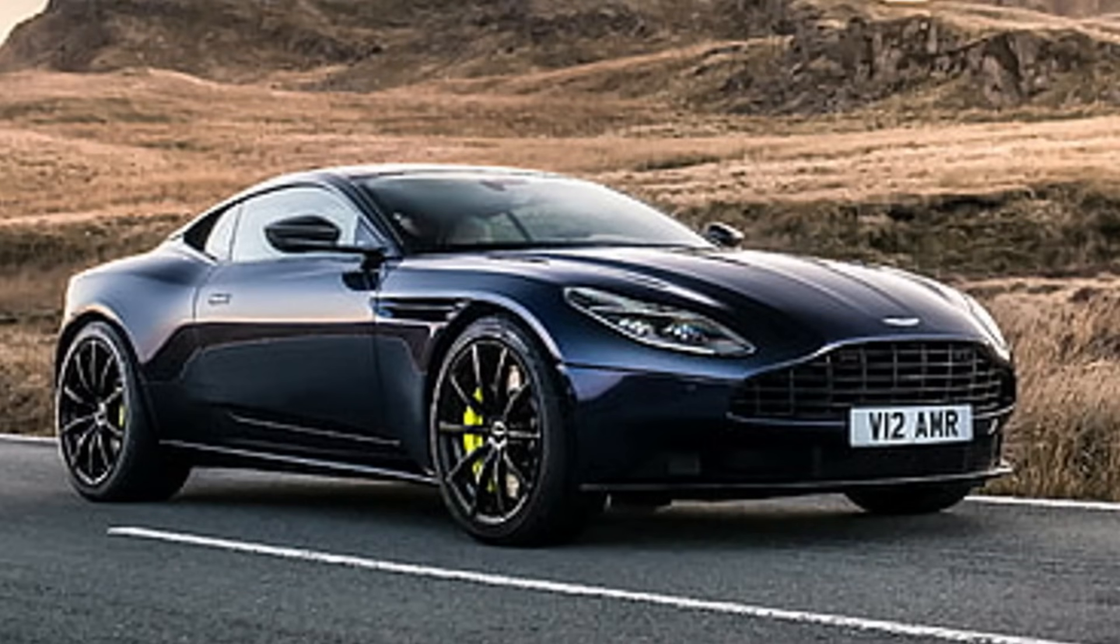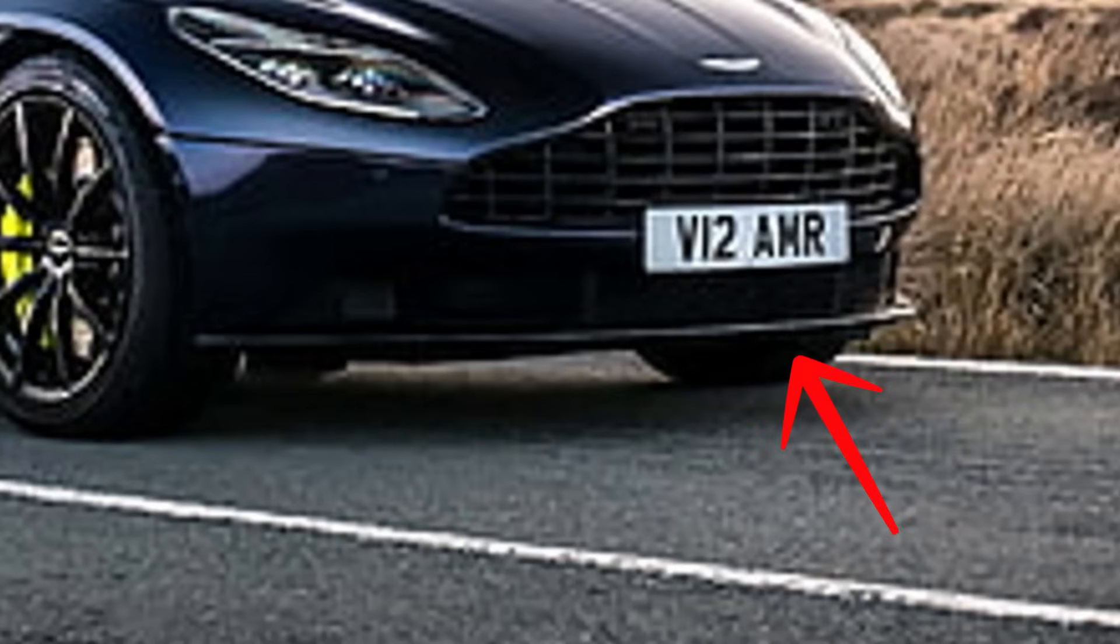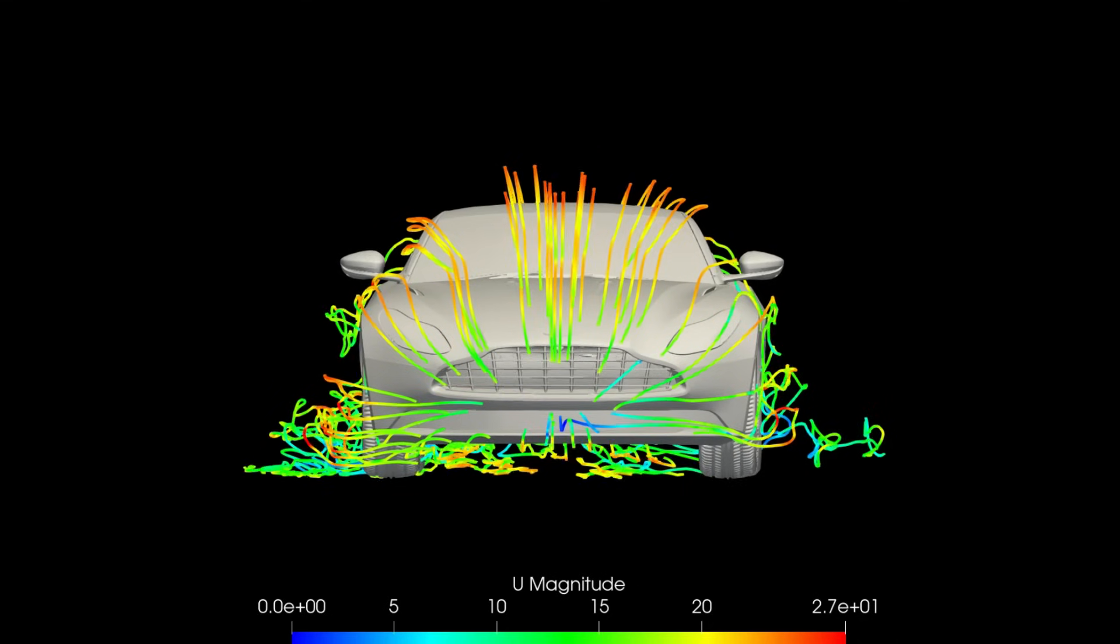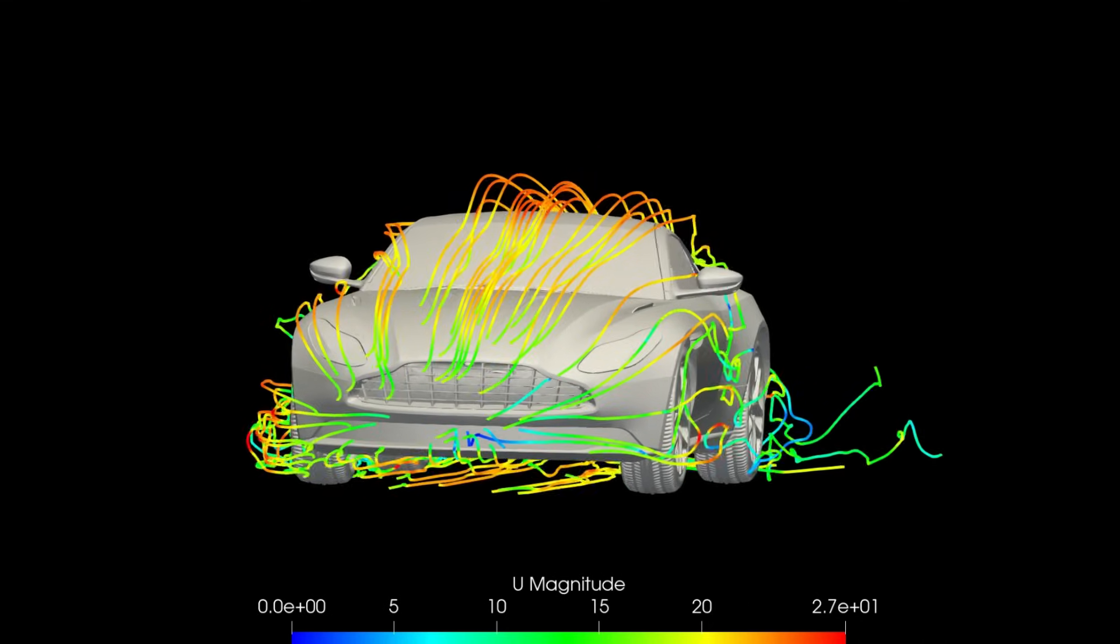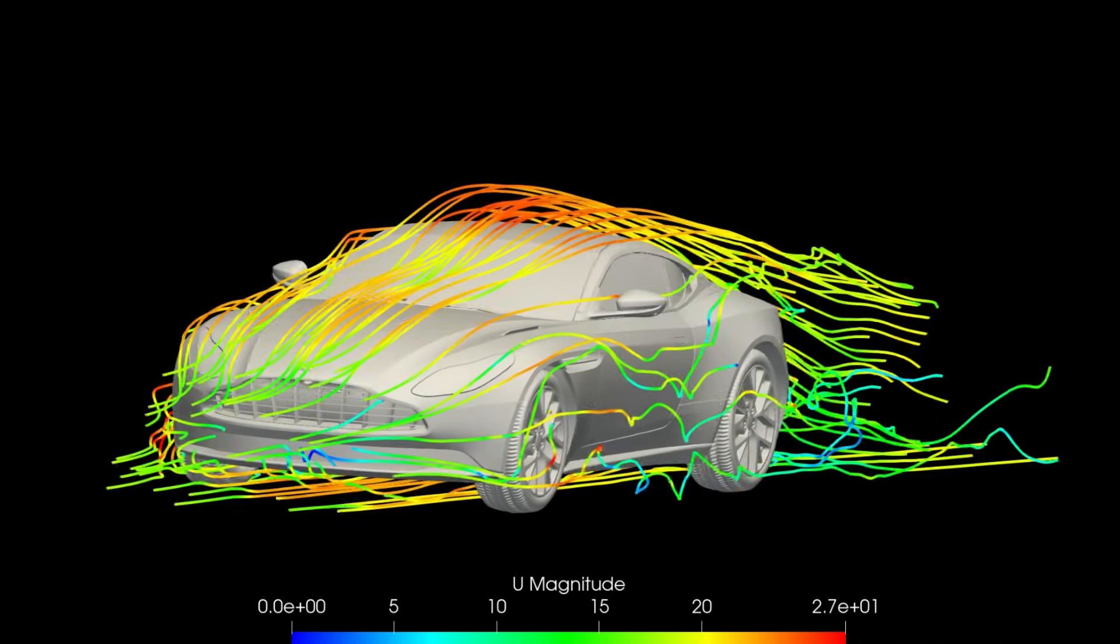It also has some impressive aerodynamic features, like a front splitter that actually works and something called an aeroblade. In this video, we'll cover the DB11's aerodynamics and how all of these features work together.